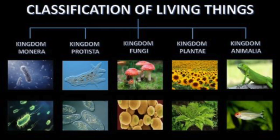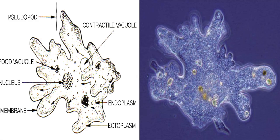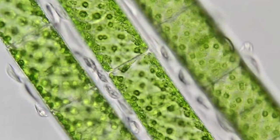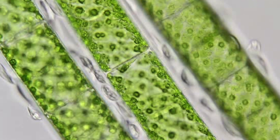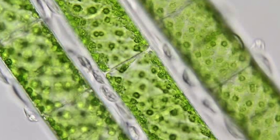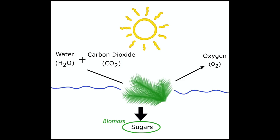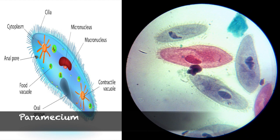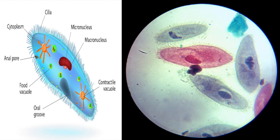Protists make up another kingdom. Most protists are one-celled organisms, like an amoeba, but some have many cells. Some protists have a green pigment, like the one in the chloroplast of plants. Like plants, they trap the sun's energy and produce sugar. Other protists, such as the paramecium, get nutrients by absorbing them from surroundings or by capturing and consuming prey.